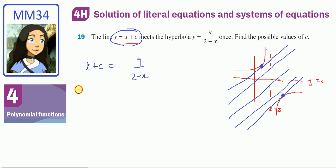So x plus c times 2 minus x equals 9. Expanding gives 2x minus x squared plus 2c minus cx equals 9.